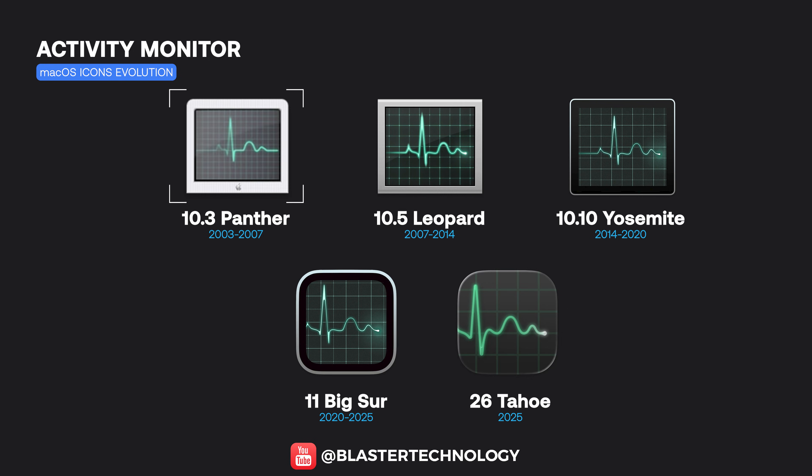The Activity Monitor icon evolved from a realistic hardware display in early macOS 10 into an increasingly simplified symbol.